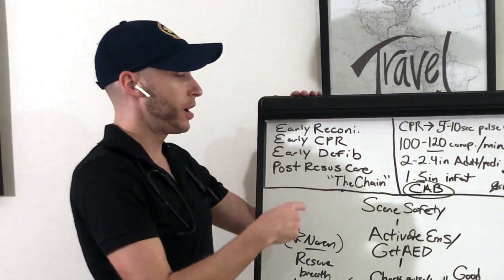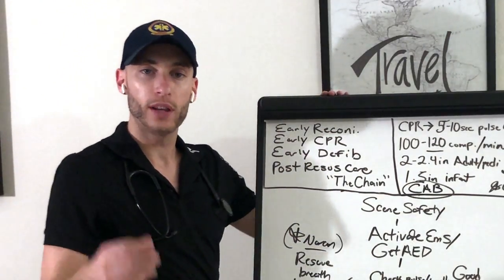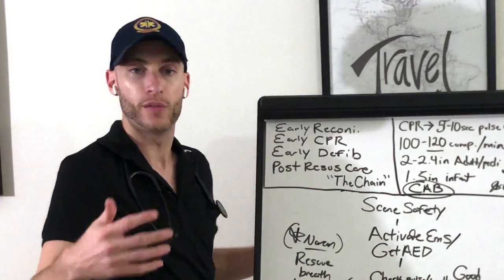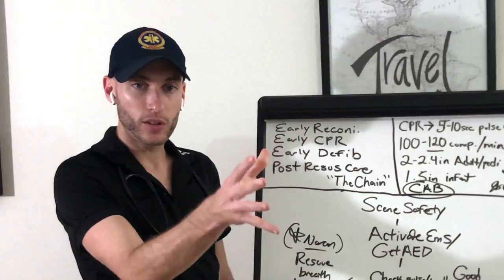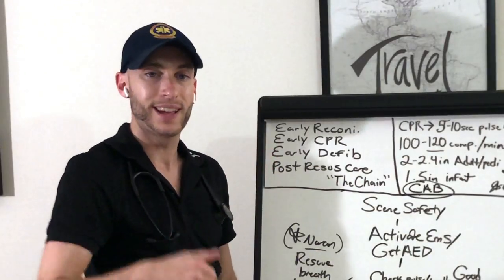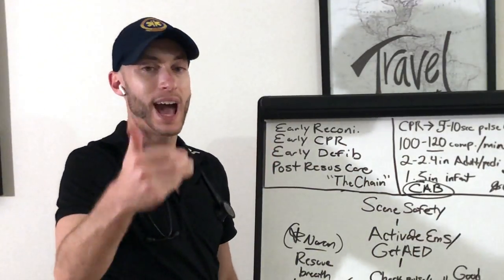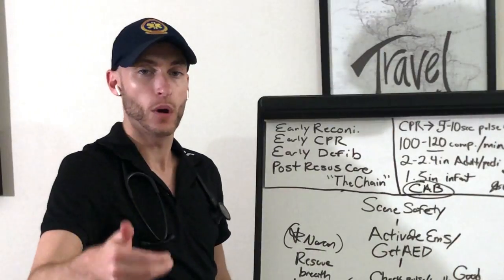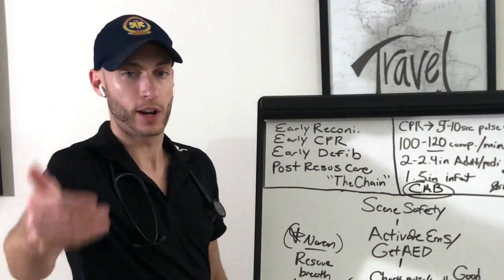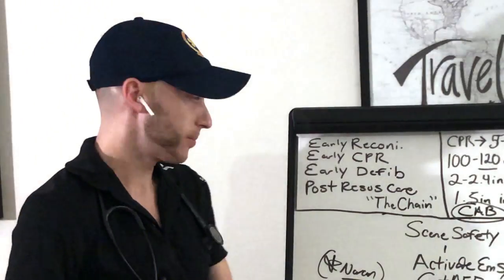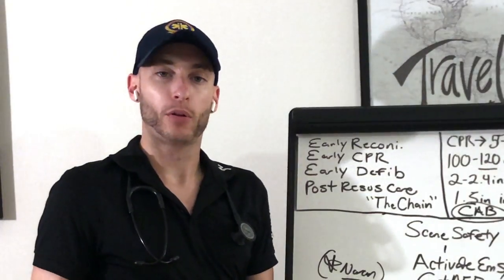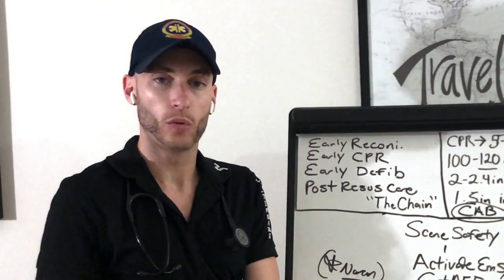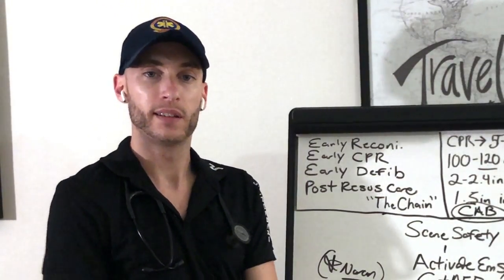The first step in the chain of survival is early recognition of an event. That means knowing if someone looks like they're about to go into cardiac arrest and getting action started — activating that emergency response system before they go into cardiac arrest. Signs include chest pain, difficulty breathing, and lightheadedness. Next is early CPR, where layperson CPR is focused on hands-only, compression-only CPR.